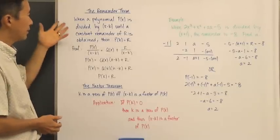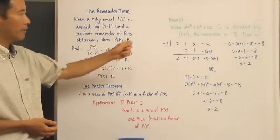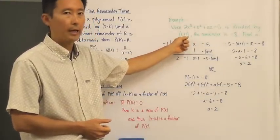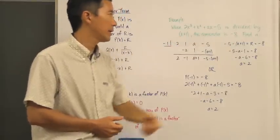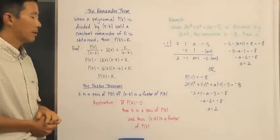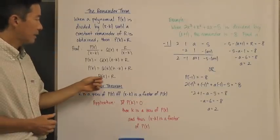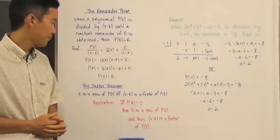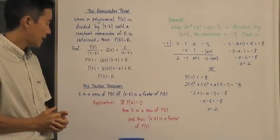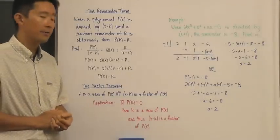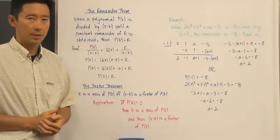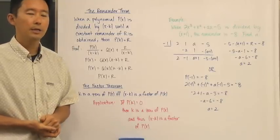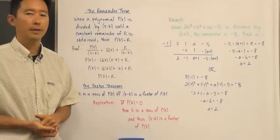To wrap up: the Remainder Theorem helps us determine a particular parameter if we know what a polynomial is divided by — as long as that is a linear factor — and we know the remainder. More generally, dividing a polynomial by x minus k gives a remainder equal to the polynomial evaluated at k. The Factor Theorem states k is a zero of p(x) if and only if x minus k is a factor of p(x), and the key result is that if p(k) = 0, then x minus k is a factor of the polynomial.